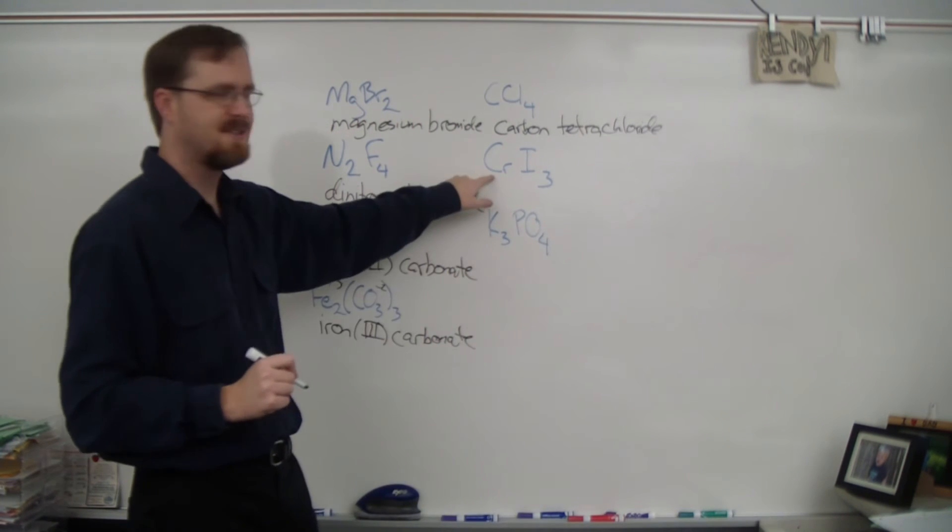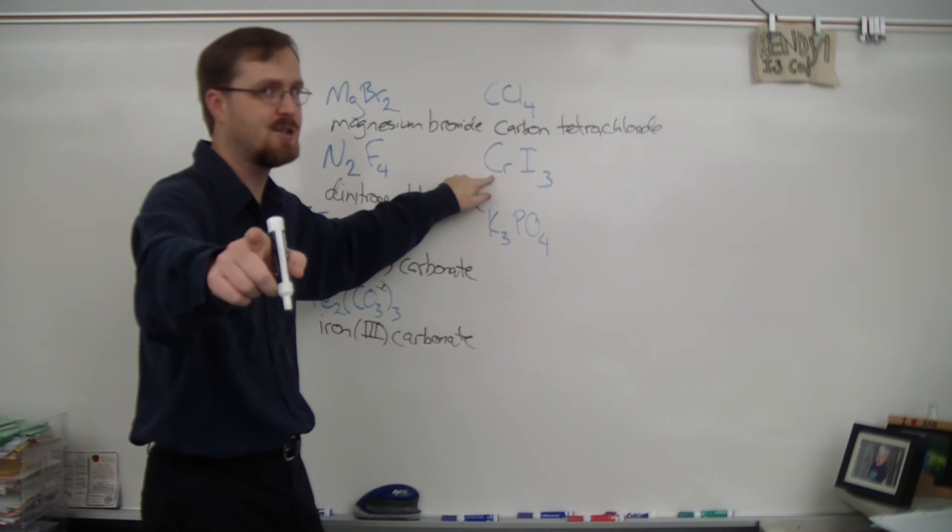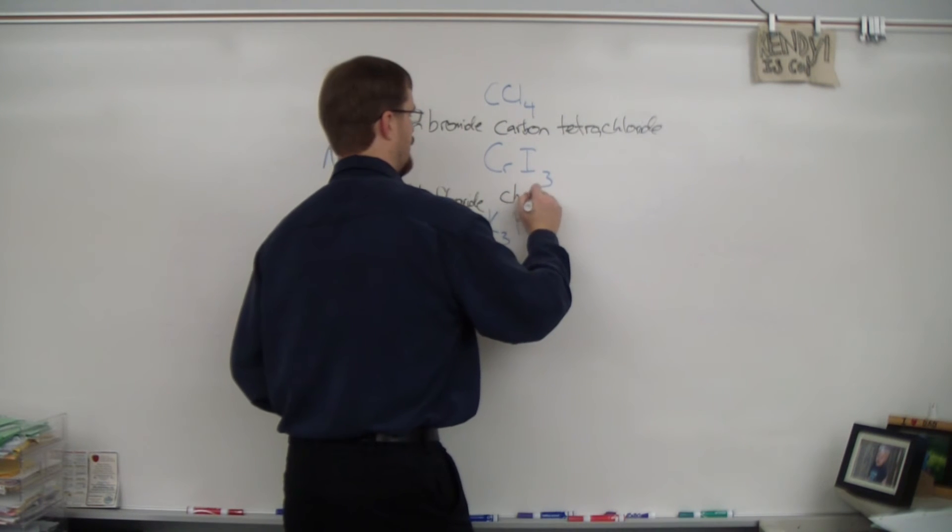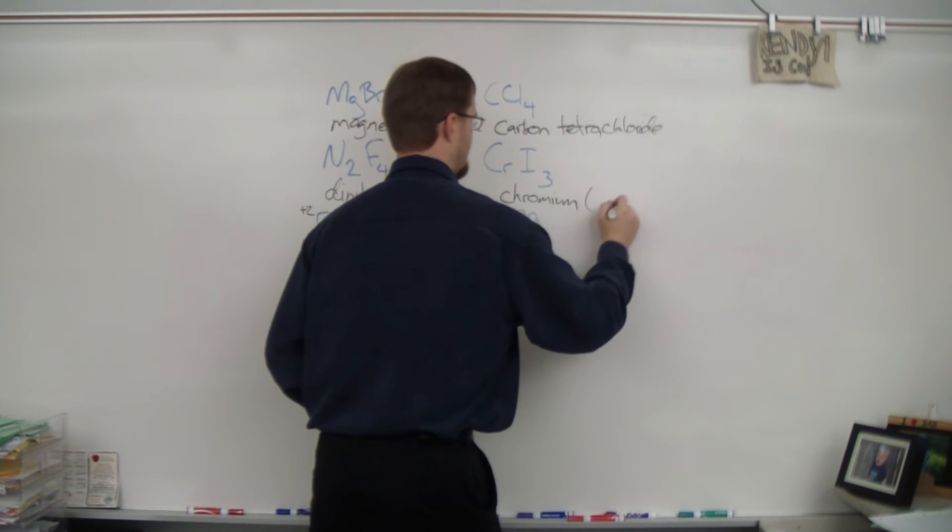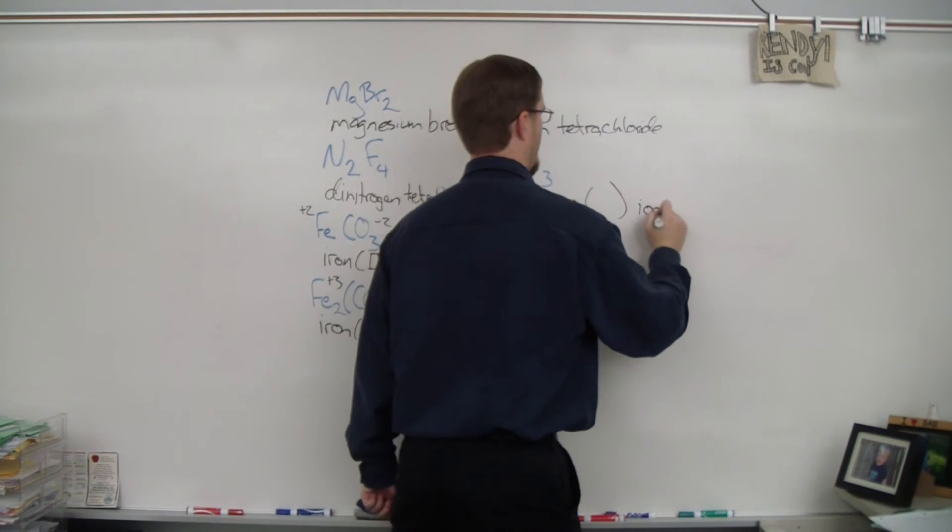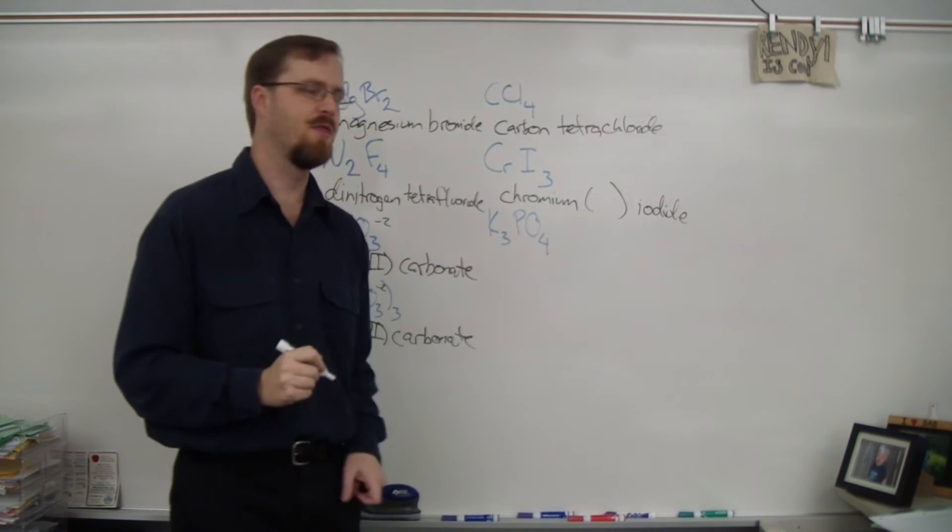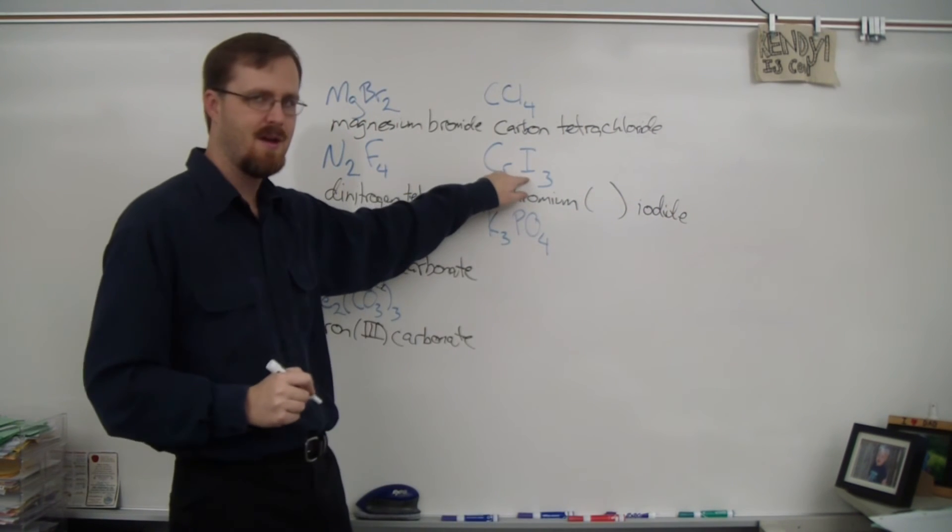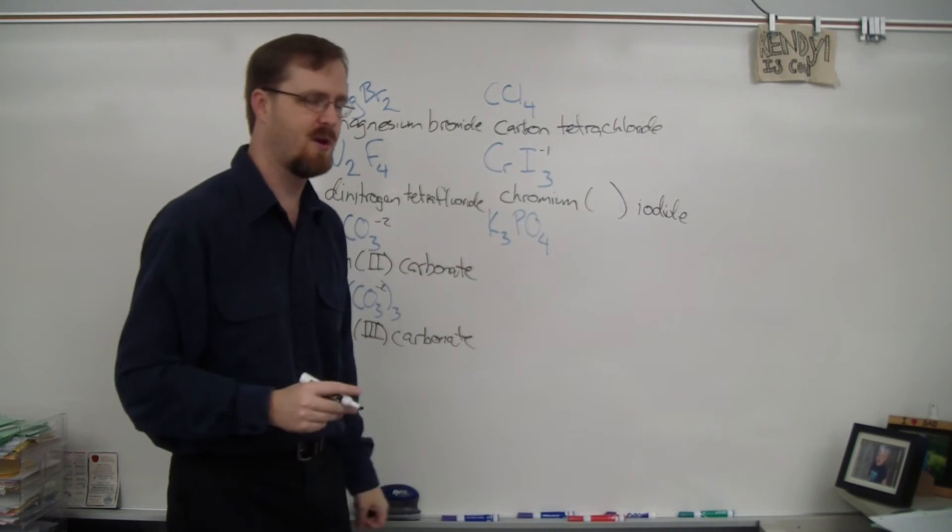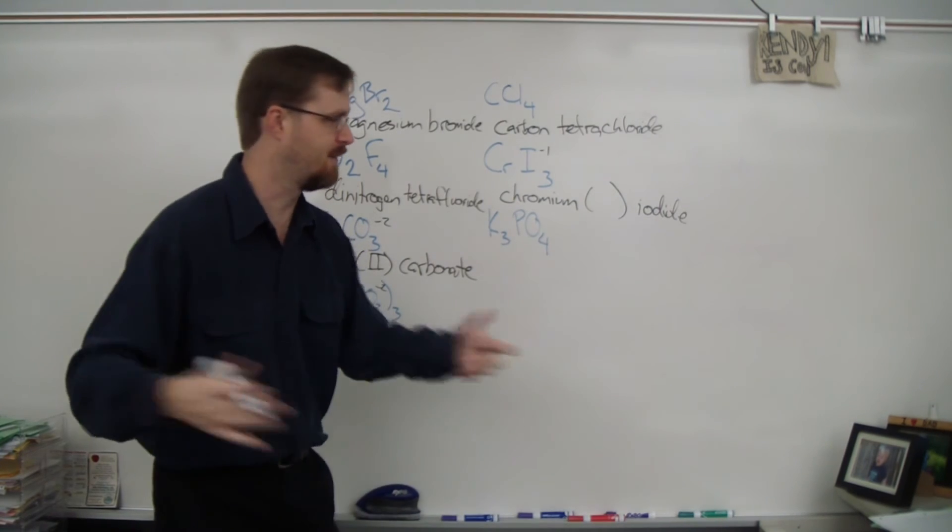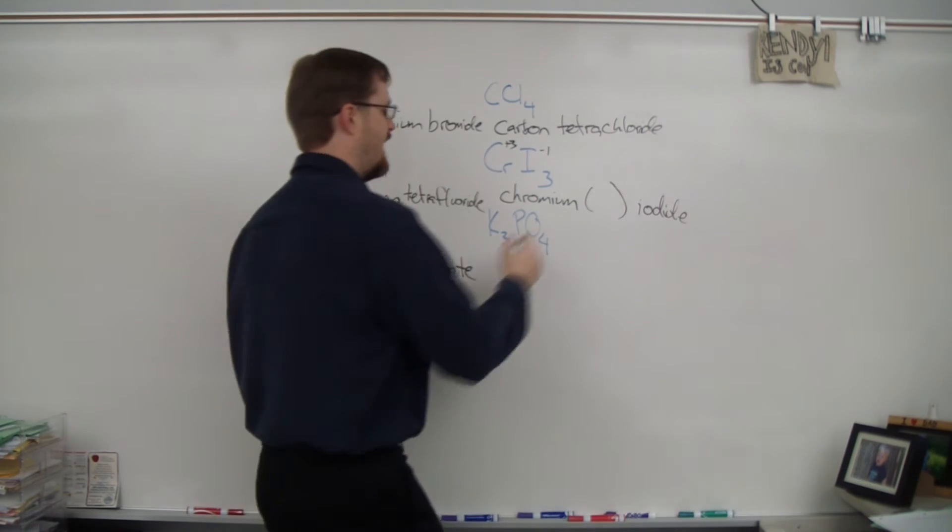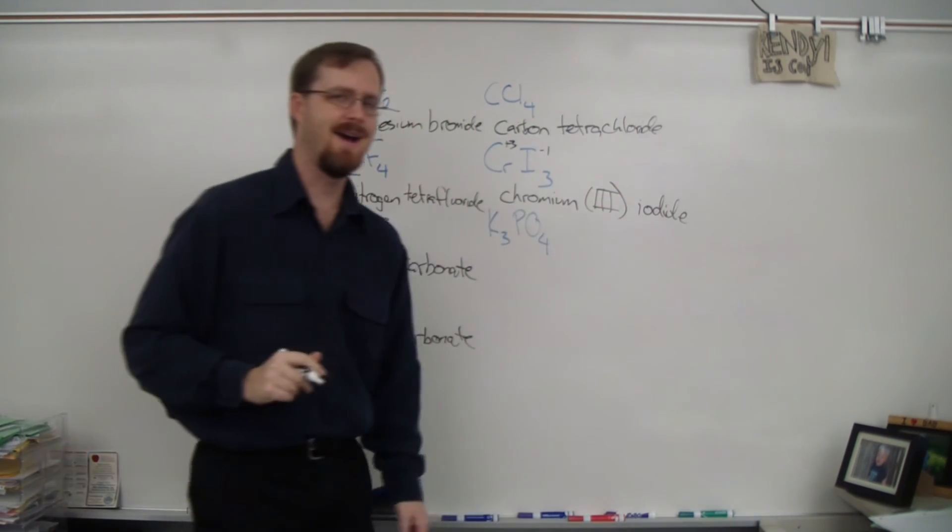Alright, and next one, CrI3. Cr is chromium, which is a metal and a transition metal. So we need, that's right, Roman numerals. So I'm going to put chromium here, set up parentheses. I is iodine, which I'm going to change to iodide. Now we've got to figure out the Roman numerals. Starting with iodine, which is in group 7, so it has a charge of negative 1. And since there are 3 of them there, that's an overall charge of negative 3. So chromium must be positive 3 in order to balance that out. This is chromium III iodide.